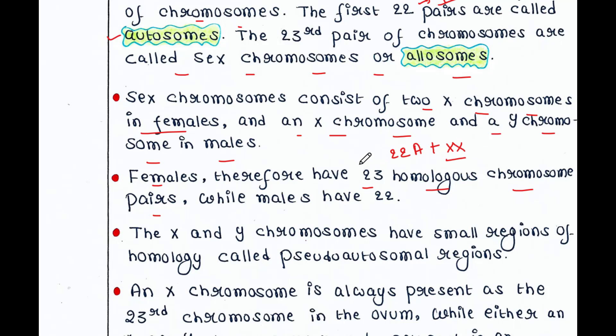So females have 22 pairs of homologous autosomes plus one pair of homologous X chromosomes, giving 23 homologous chromosome pairs total. But males have only 22 homologous chromosome pairs, since they have one X and one Y chromosome, and X and Y are not homologous chromosomes.